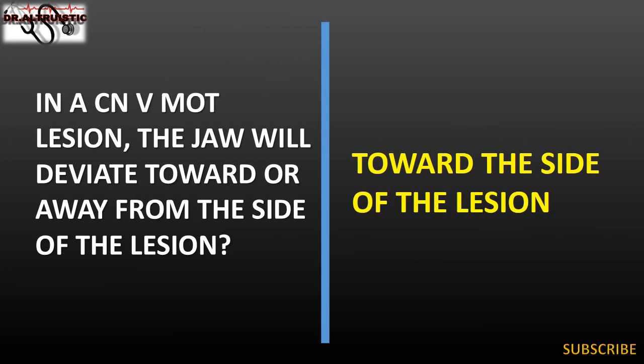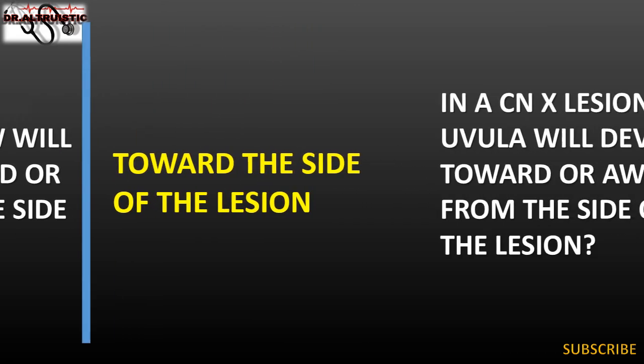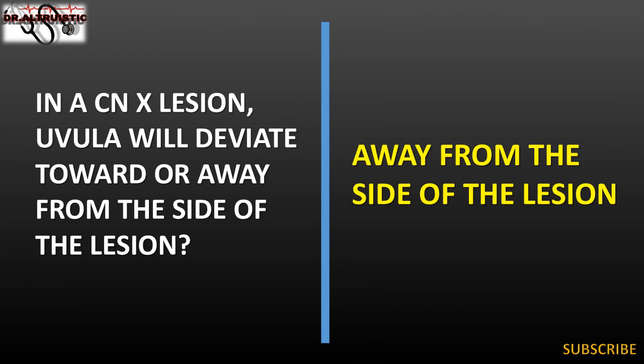In a CN-V motor lesion, the jaw will deviate toward the side of the lesion. In a CN-X lesion, the uvula will deviate away from the side of the lesion.